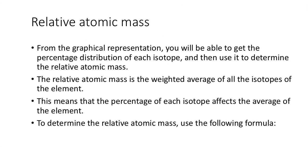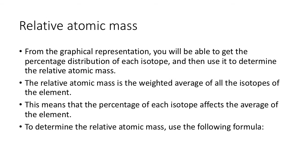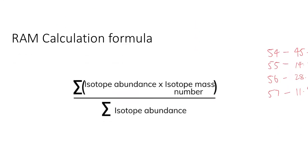From the graphical representation, you'll then be able to use the percentage distribution, that's the one that we just worked out, of each isotope and use it to determine the relative atomic mass. The relative atomic mass, again, is the weighted average of each element. That means that the percentage of each isotope affects the average of the element. So if there's more of one particular isotope, the average is going to be weighted towards that one which has more of it. So to determine the relative atomic mass, we're going to use the following formula which is shown here.